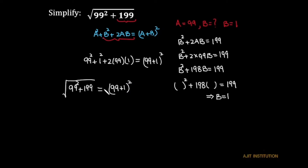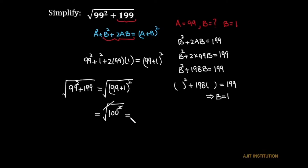So our expression — the square root of 99 squared plus 199 — equals the square root of (99 plus 1) squared, which equals the square root of 100 squared. The square root and the square cancel, giving us 100. That is our answer.